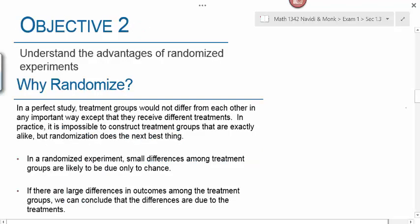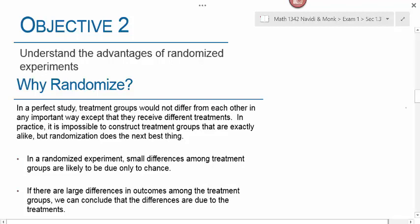Objective two is understanding the advantages of randomized experiments. In a perfect study, treatment groups would not differ from each other in any important way except that they receive different treatments. In practice, it's impossible to construct groups that are exactly alike, but randomization does the next best thing. In a randomized experiment, small differences among treatment groups are likely due only to chance. If there are large differences in outcomes among treatment groups, we can conclude those differences are due to the treatments.